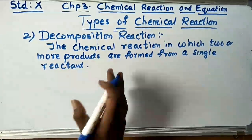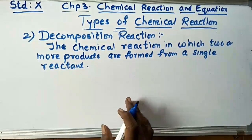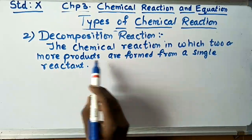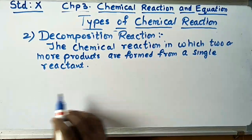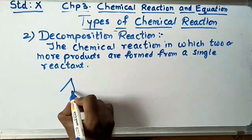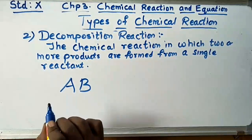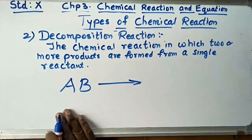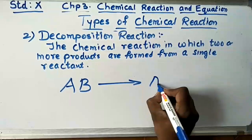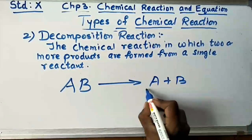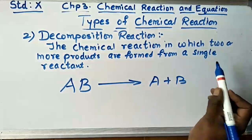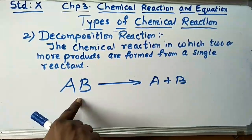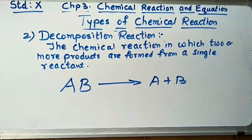Decomposition reaction is the total opposite of combination reaction. The definition is: the chemical reaction in which two or more products are formed from a single reactant. For example, a single reactant AB, after the reaction, splits into two parts: A plus B. We call this a decomposition reaction.